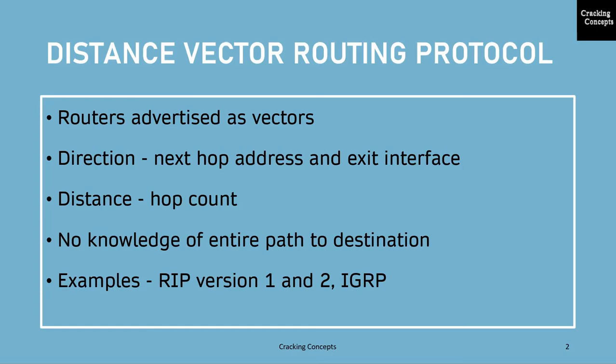Routers using distance vector routing protocol do not have knowledge of the entire path to a destination. Examples of distance vector routing protocols include routing information protocol version 1 and 2, and IGRP which is interior gateway routing protocol.